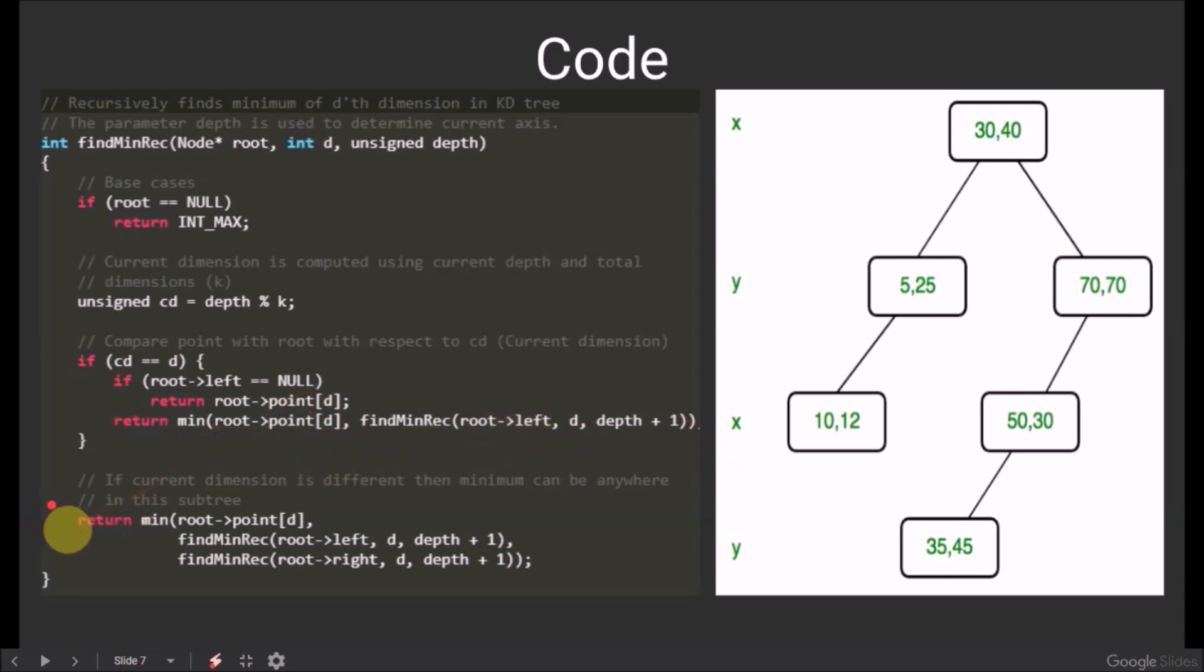But in case the current dimension is not equal to the current depth, we have to search the minimum in the left subtree as well as the right subtree and the current node. Suppose the required dimension is y and the current dimension is x. So the minimum element can be either in the left subtree or the right subtree or in the current dimension. To find the minimum of all these cases, we recursively call the left subtree and the right subtree. And we also compare it with the current node.